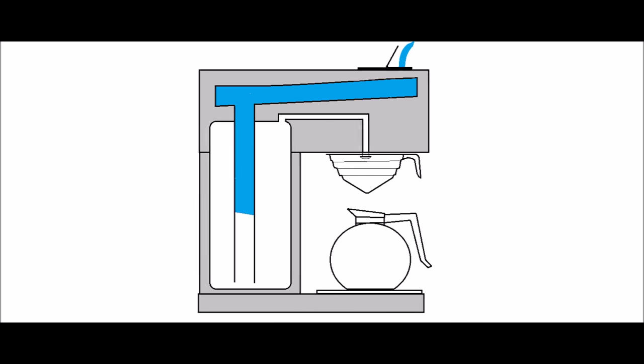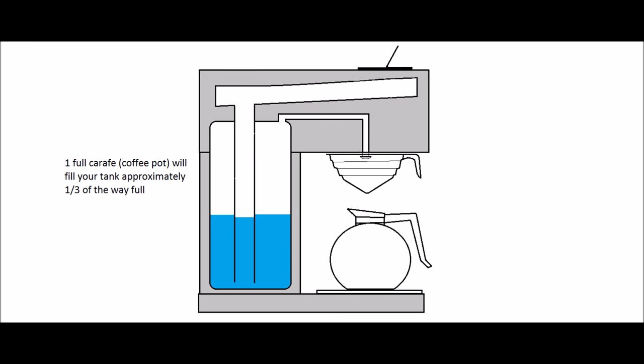The first step is to pour a full carafe of cold water into the pour-over basin. As you can see, the first pot of water will fill your holding tank approximately one-third to half full depending on your specific model.